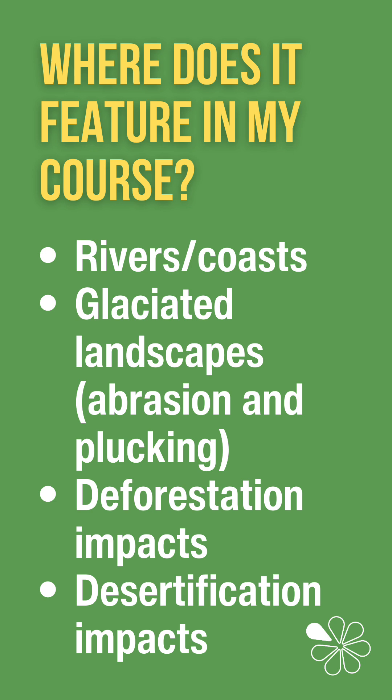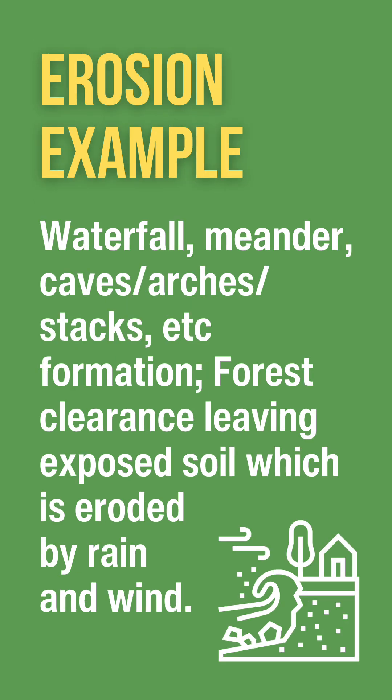It also features in the UK Physical Landscapes Unit when we look at coastal and river landforms that have been shaped by erosion. And if you do the glaciation landform option, you should also be familiar with the erosional processes of abrasion and plucking. An example of erosion is how hydraulic action and abrasion leads to the formation of waterfalls along rivers, and caves, arches, and stacks at the coast.